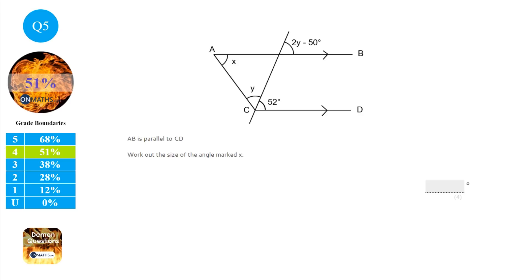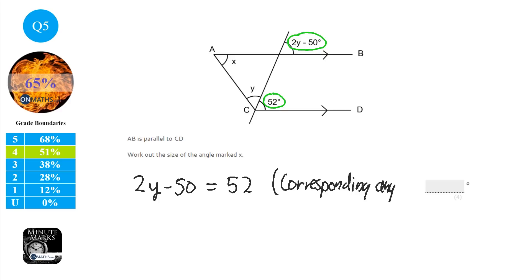For these types of questions, always make sure that you show you're working. Show how you know something is something. So the way I would start this, and this is not the only correct answer, is I realise that these two are the same. So I know that 2y minus 50 equals 52. And the reason I know that is that they are corresponding angles. Now some of you might know that as f-angles, but make sure you write the word corresponding, because they won't accept any other word. So I can solve this by first of all adding 50 to both sides. So that's 2y equals 102. Then I'm going to half both sides. So y equals 51.